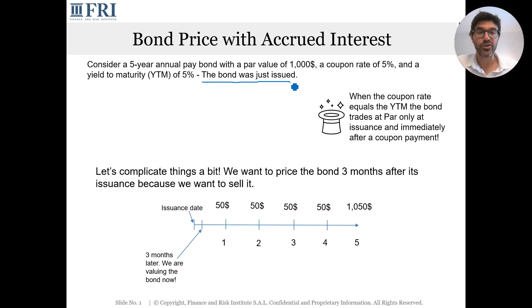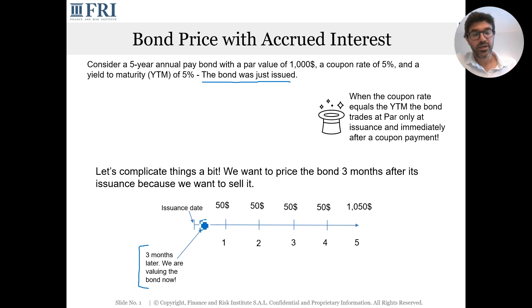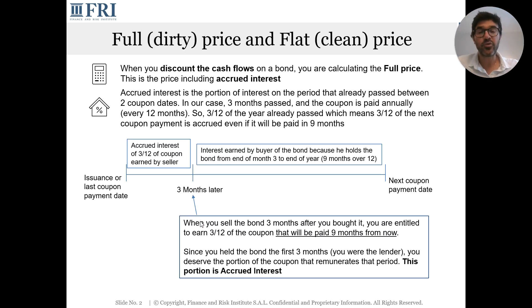What if you're interested in selling the bond three months later? We now want to price the bond three months after its issuance. The golden rule is that anytime you discount all the future cash flows on a bond to calculate its price, what you're actually calculating is always the full or dirty price. Anytime you discount all the cash flows on a bond, it is the full price that you are calculating — no hesitation.